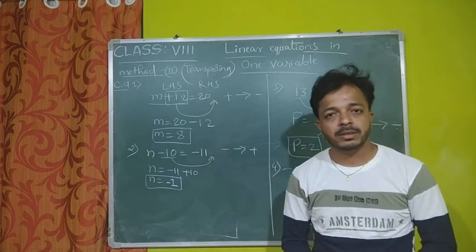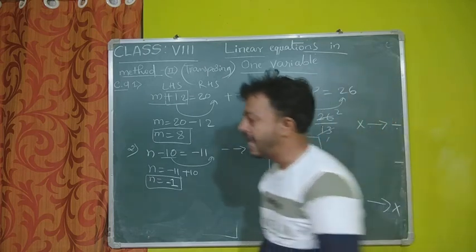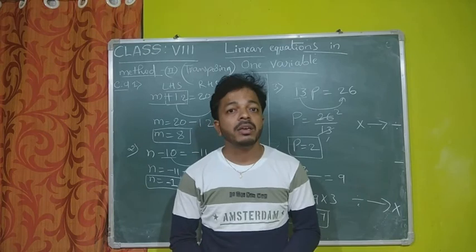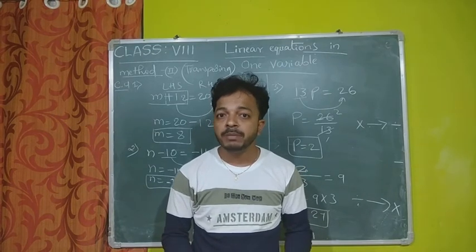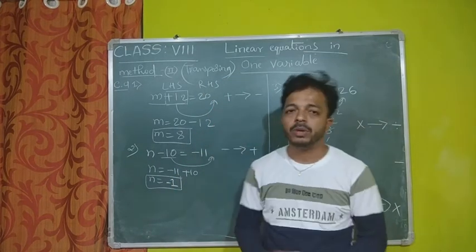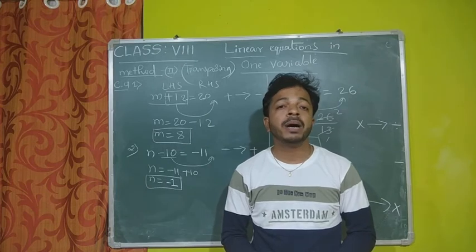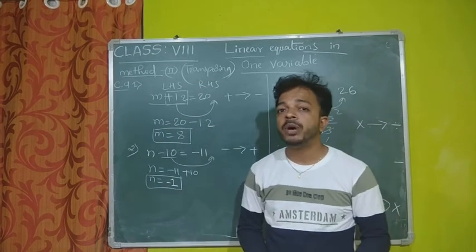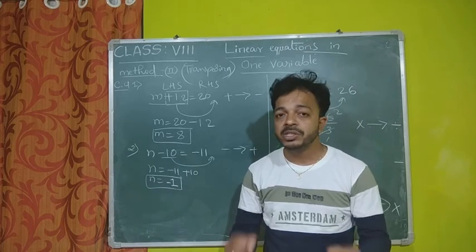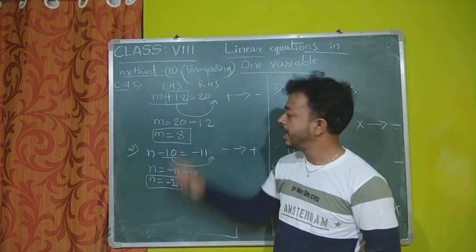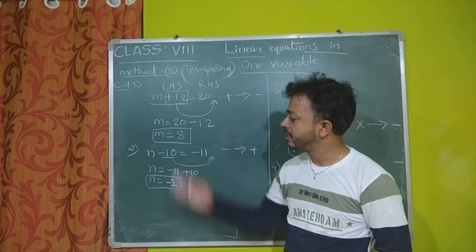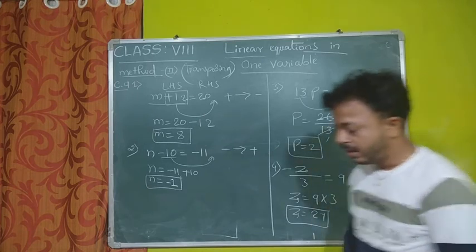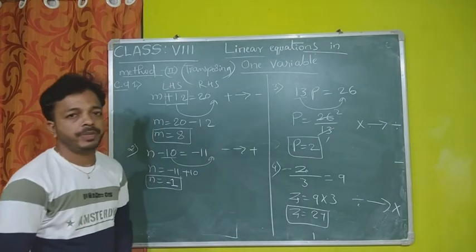So we have learned two methods: the basic normal method, which we can call the balancing method, and the second method, the transposing method. In an exam, if they ask to simplify the given equation, you can use any method. If they specifically say transposing method, use that one. Method 1 doesn't have a particular name, so they won't ask for it by name — they'll just say simplify the given equation and find the value of the variable.